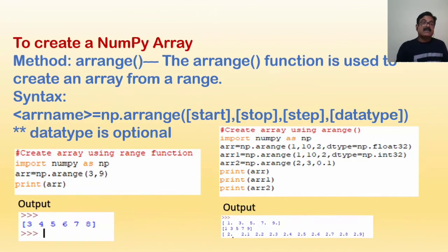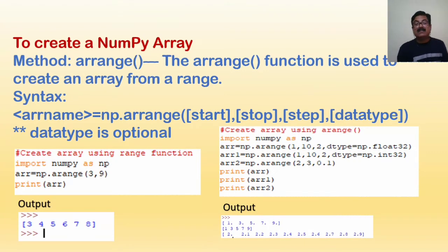The arange method is used to create an array from a range. The syntax is: np.arange(start, stop, step, dtype). You can see arr1 and arr2 — for example, from 3 to 9 means elements from 3 to 8 are created (one less than stop). Another example produces [1, 3, 5, 7, 9] using float32 dtype. You can also use a step of 0.1 with a start of 2 and stop of 3. The data type parameter is optional.